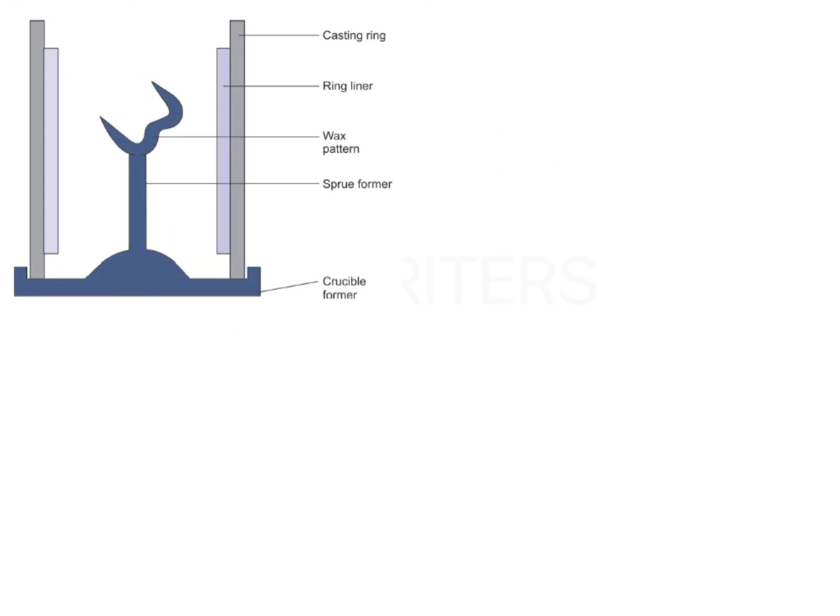Let's run through the casting assembly first so that it's easier for us to understand the defects. We have the casting ring which can be metal or silicon, a ring liner which may or may not be present, the wax patterns, sprue formal and crucible former, and here is where there is all investment material.